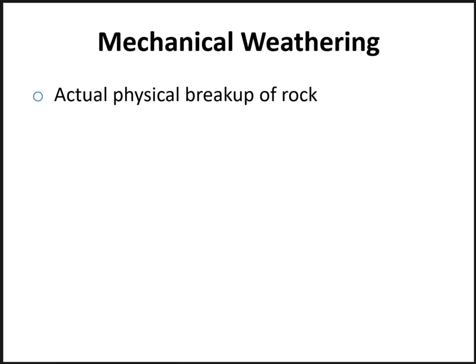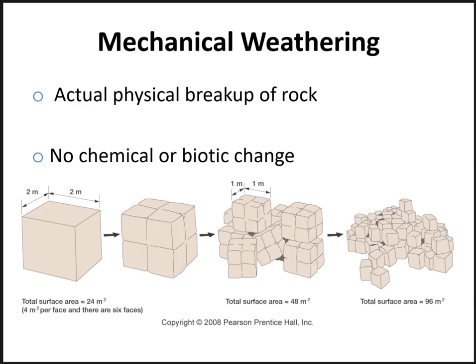Mechanical or physical weathering is the actual breakup of rock — it's going to change the size and shape of the rock with absolutely no chemical or biotic change occurring. This figure illustrates mechanical weathering, where a large rock is physically broken into smaller pieces, making it easier for surface materials to chemically decompose and be eroded. When a large block of material is broken into smaller pieces, additional surface area is exposed for chemical weathering to act on.